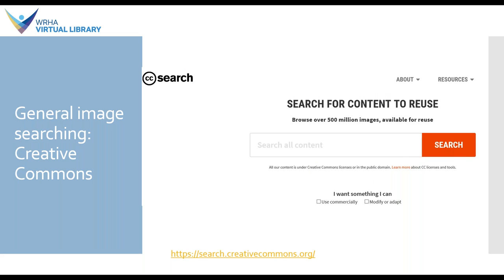Another general image searching option is the Creative Commons search. This search is ideally limited to Creative Commons licensed images and it allows you to use checkboxes under the search bar to limit your search to specific licensing options. For example, if you needed an image you were able to use commercially, or an image you were able to adapt or edit, you could use those checkboxes to limit your search accordingly. This is a really helpful search tool when you need an image and want to use it under Creative Commons terms.